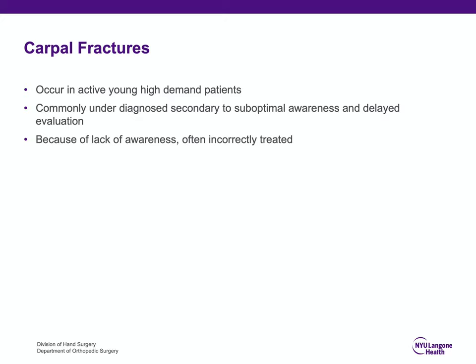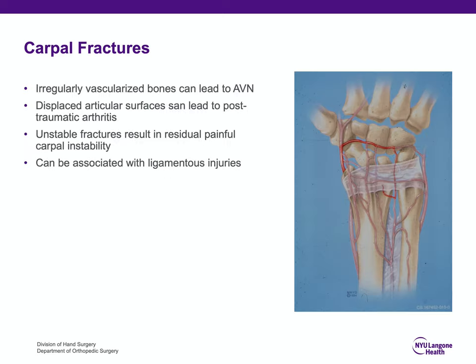When there is delayed evaluation and treatment, there can be a somewhat poor prognosis for the patient. A lot of the carpal bones have an unusual blood supply, including the scaphoid, capitate, and lunate, and that can sometimes lead to avascular necrosis when there's a delay in diagnosis and treatment.